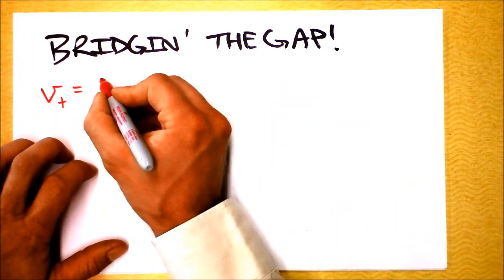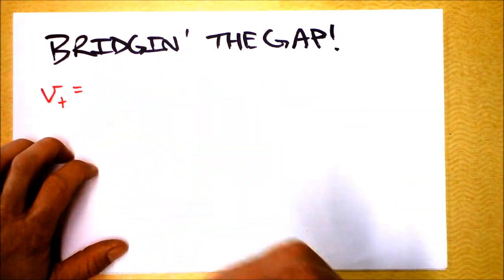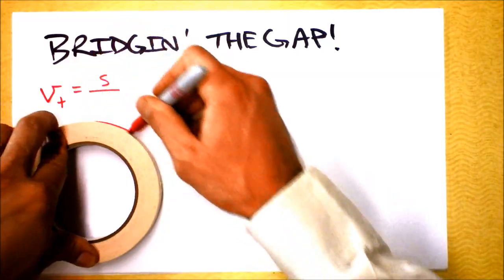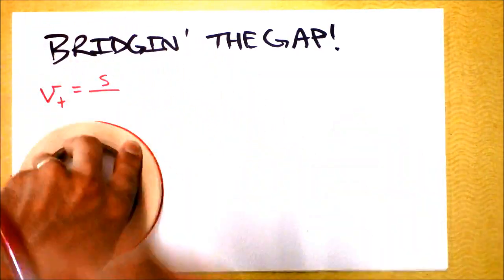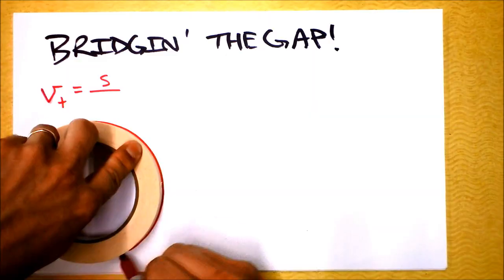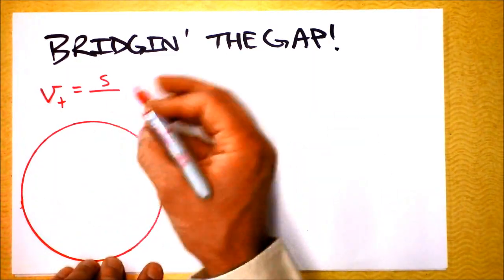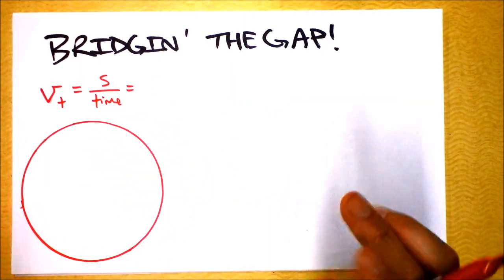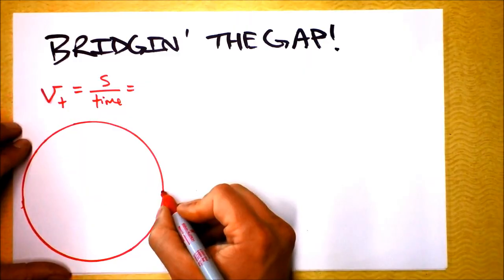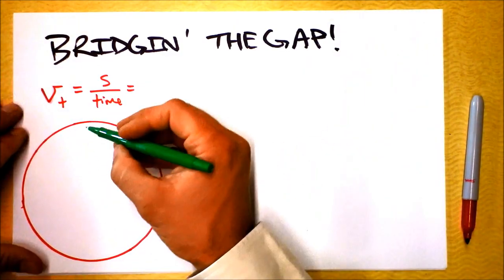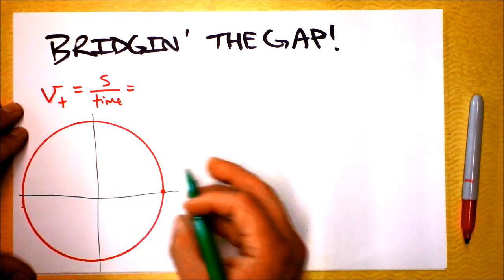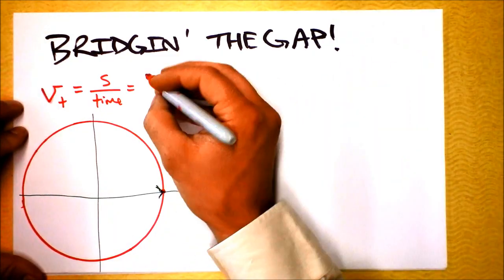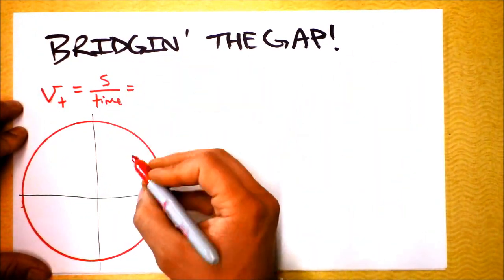We're going to say tangential speed is how far you've gone divided by time — that's distance over time. Let's draw a circle: S is how far we've gone along the circle, and time is in the denominator. Let's consider one circular path — starting here and going all the way around, asking what the arc length is.